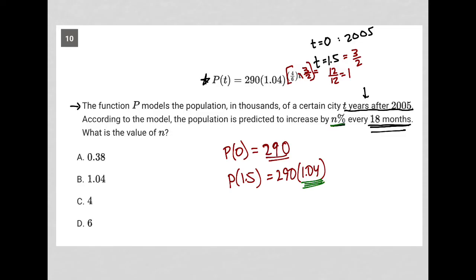So my percent increase here is found all in the 1.04. So 1.04 represents a 4% increase. Here's why. So 1.04 is the same as 104%. Okay.